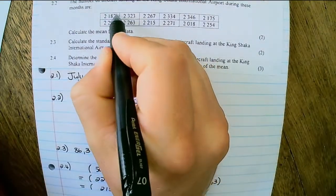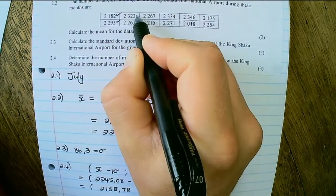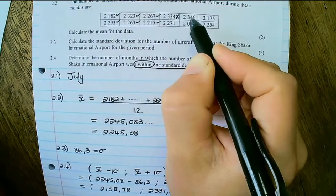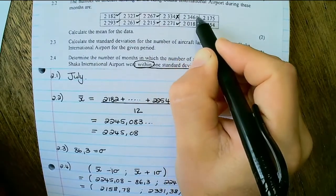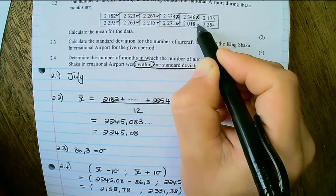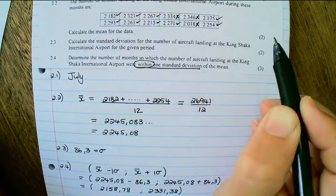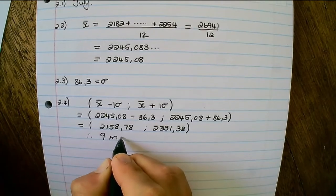So it could be 1, 2, 3, 4, 5, 6. That one is too high. 7. That one is too high. This one is too low. 8, 9. Therefore, 9 months.